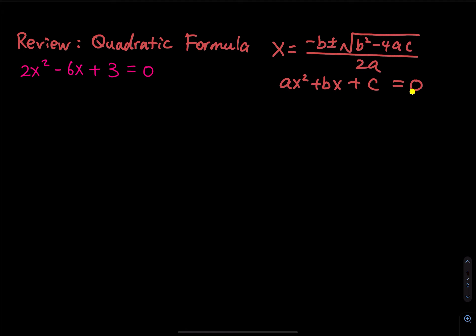So you have that equals zero and you want to find out what x equals. You use the quadratic formula. You might ask: can I just factor the quadratic equation and then apply the zero product property? Absolutely yes, but not all quadratic equations are factorable. If the quadratic equation cannot be factored, then use the quadratic formula.